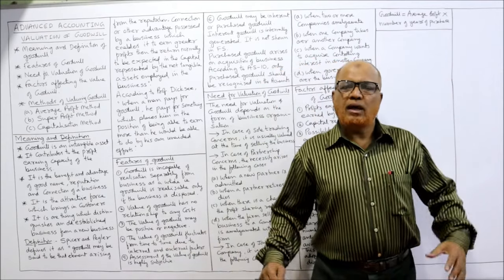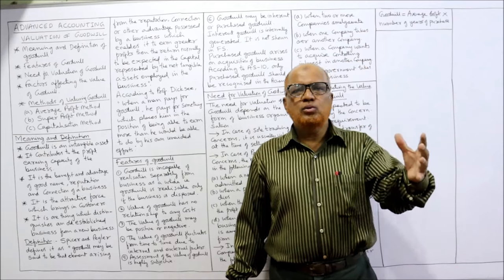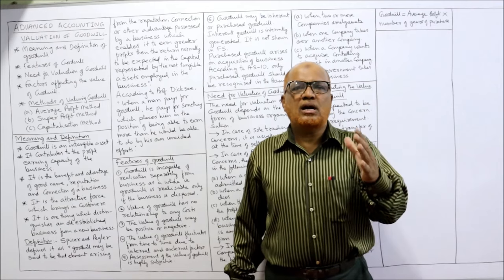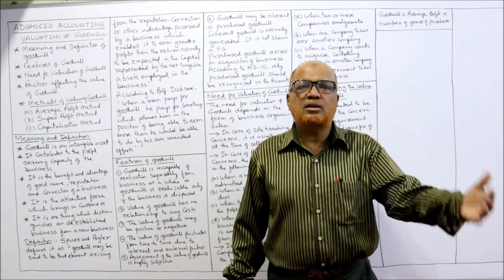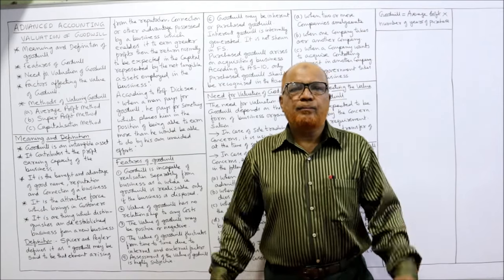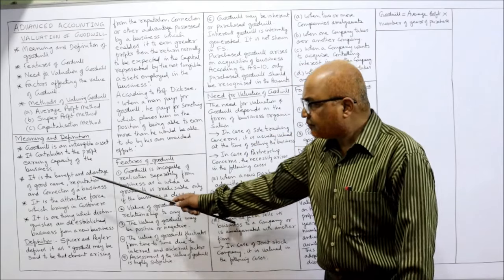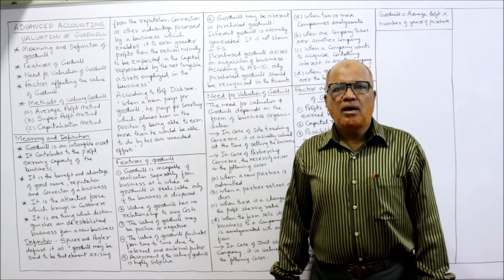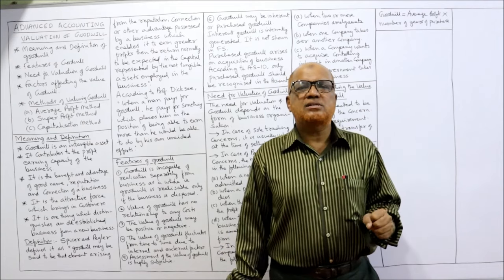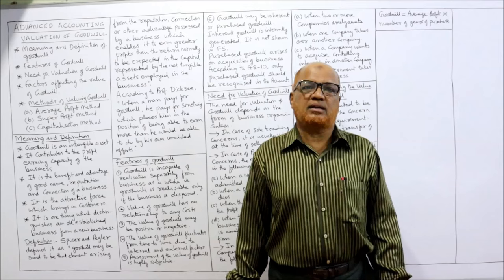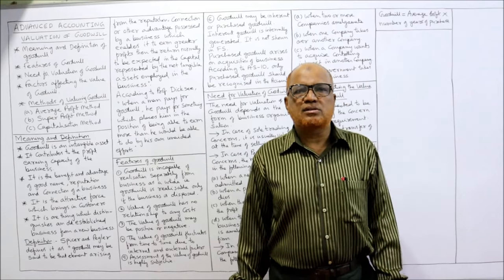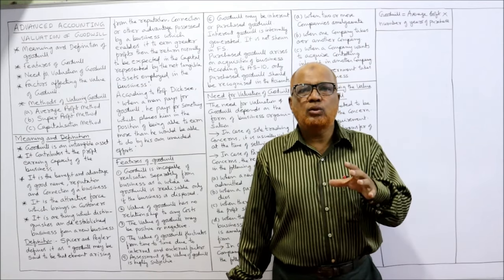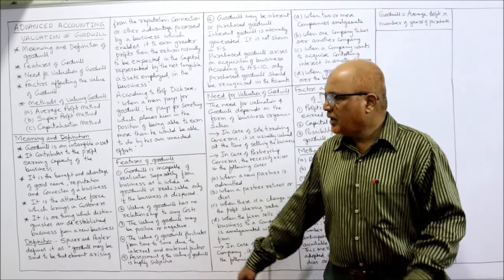So first point: goodwill is one of the intangible assets. Secondly, it contributes to the profit-earning capacity of the business. A business earns profit by using its assets — both tangible and intangible. Goodwill helps in generating the profits of the business. Whichever business has goodwill, the earning capacity will be more. It is a benefit or advantage of good name, reputation, or connection of the business. Not every business has goodwill — only those with reputation among customers and connection with other entities.